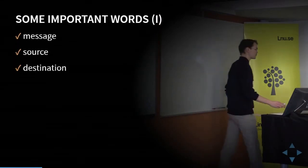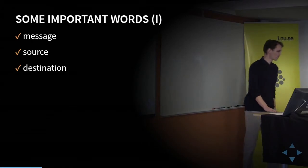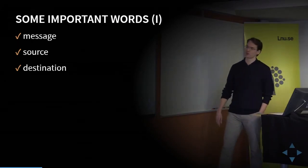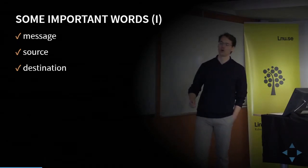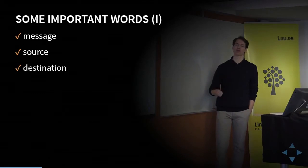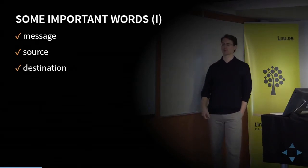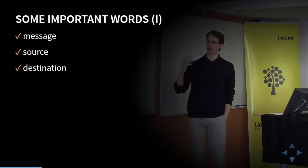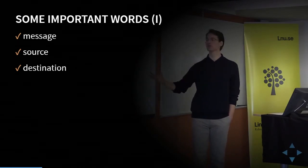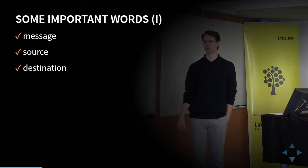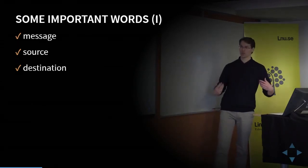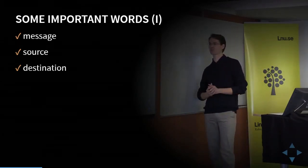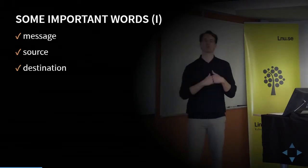There are a couple of other interesting words: message, source, and destination. Message is just another word for the data in the previous picture — the information that we want to transmit. The source is the one who wants to transmit this information, and the destination is the one it's sent to. So the source, here and now, is me, and the destination is all of you.